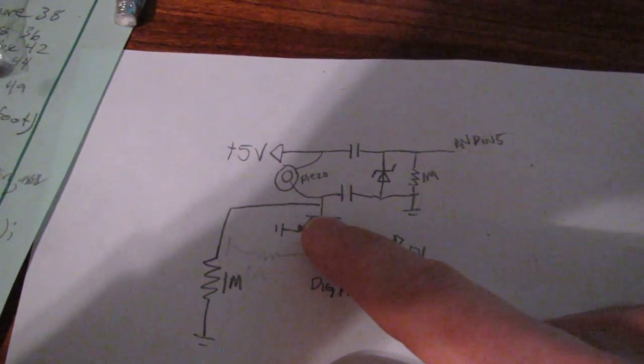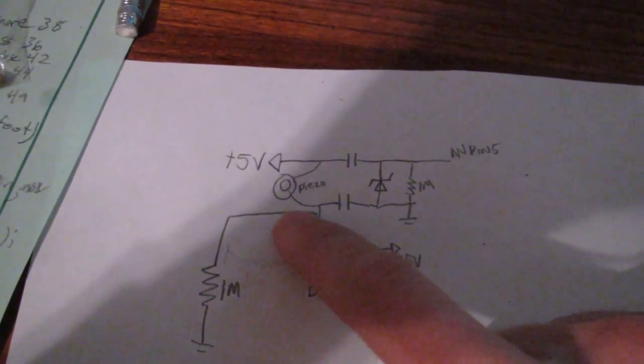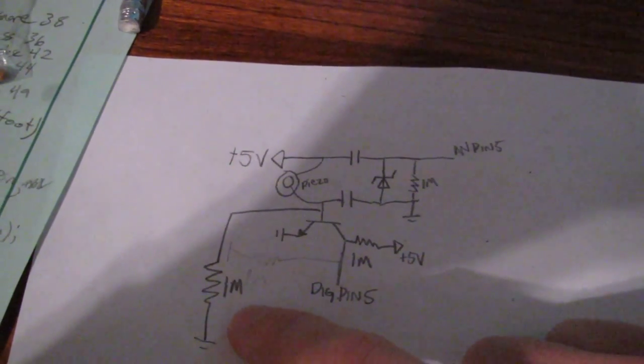And then to keep the base from floating and keeping this transistor on, there's a 1 megaohm pull-down resistor.